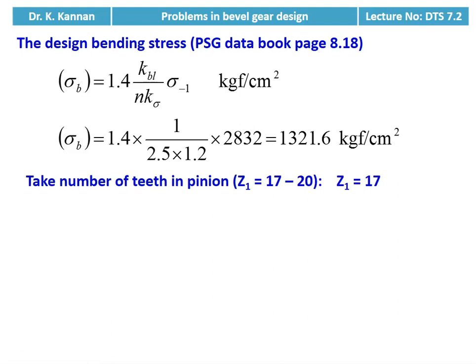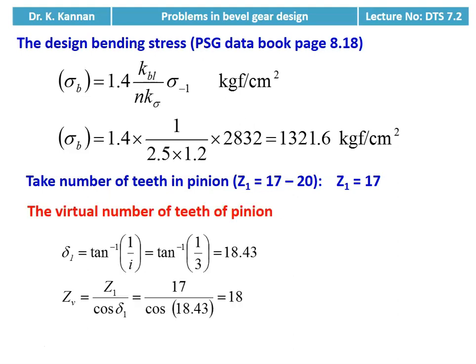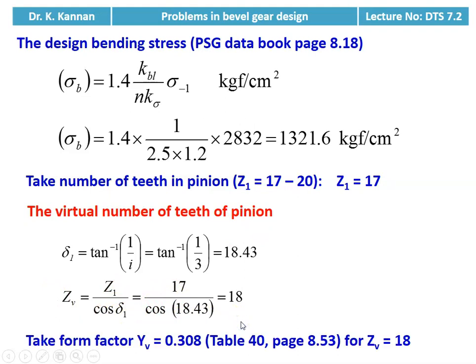We assume number of teeth on the pinion — it is not given, so we take between 17 to 20; we take Z1 = 17. Then we calculate the virtual number of teeth on the pinion. First, δ1 = tan⁻¹(1/i) = tan⁻¹(1/3) = 18.43°. Virtual number of teeth ZV = Z1 / cos δ1 = 17 / cos 18.43° = 18. We take form factor YV = 0.308 from table number 40 for ZV = 18.